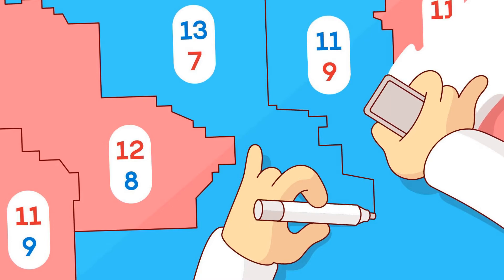If you spread them out evenly, sending 20 to each battlefield, your opponent could concentrate their own troops and easily win a majority of the fights. You could try to overwhelm several locations yourself, but there's no guarantee you'll win, and you'll leave the remaining battlefields poorly defended.